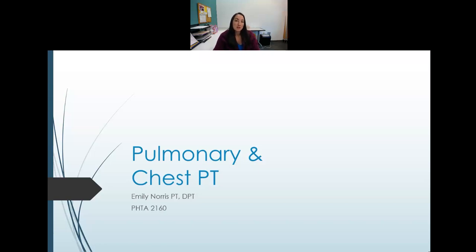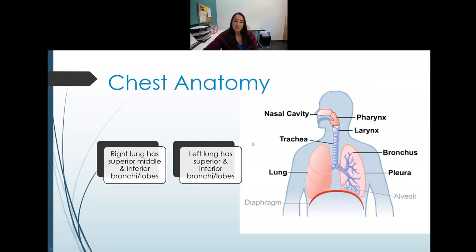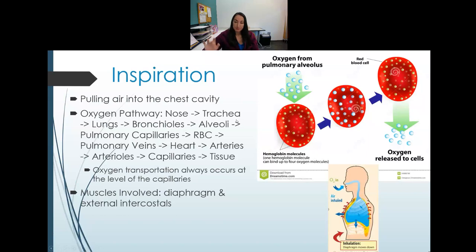Let's start with chest anatomy. First, we want to talk about the difference between the right lung and the left lung. The left lung has two lobes: superior and inferior. The right has three: superior, middle, and inferior. Inspiration is when we breathe in — it's pulling air into the chest.